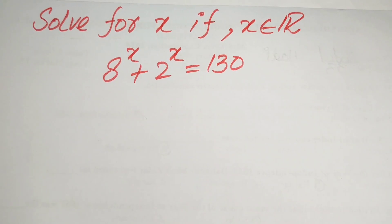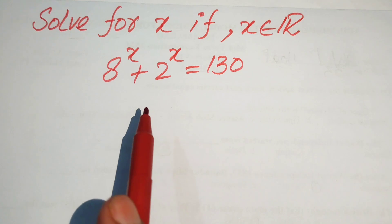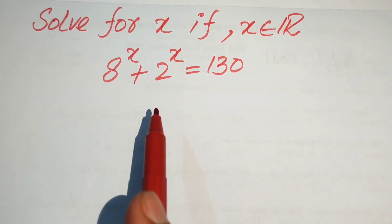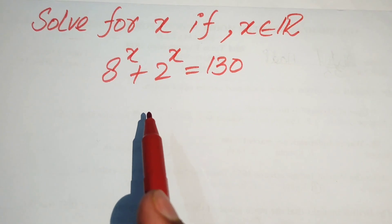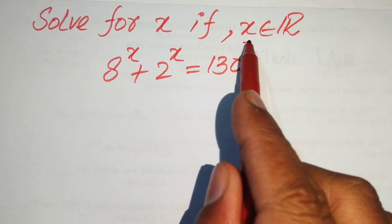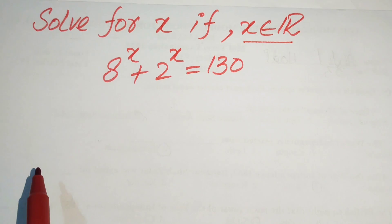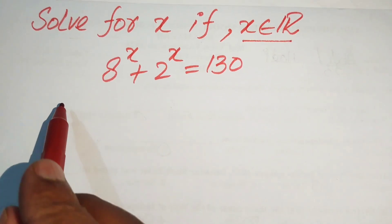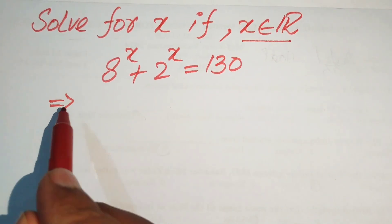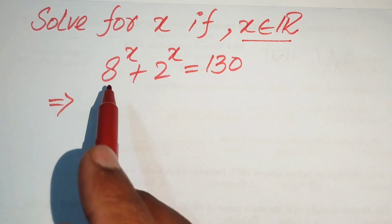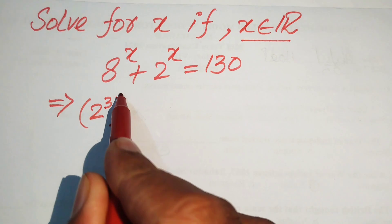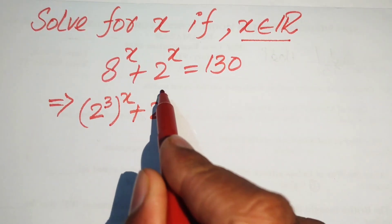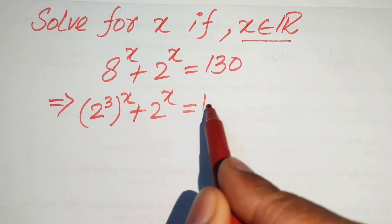Hello everyone, welcome. We will solve this algebra problem: 8 to the power of x plus 2 to the power of x equals 130, and we solve this for the real values of x.